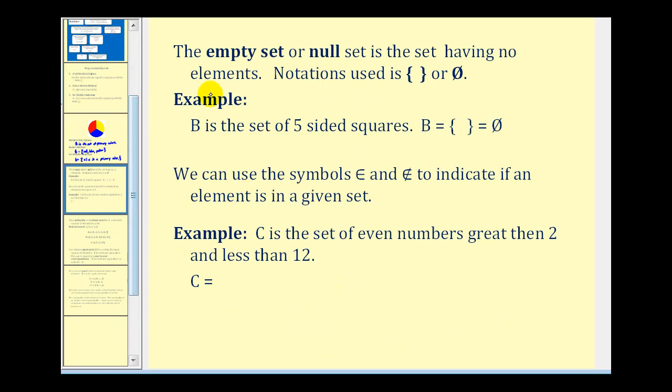There's also a special set called the empty set or null set. This is a set having no elements at all. The notation used for an empty set would be either of these two notations. For example, if B is the set of five-sided squares, since there aren't any five-sided squares, B would be the null set or empty set as identified here.